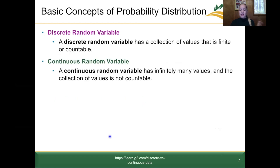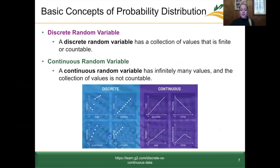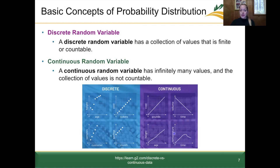Another way to think about discrete versus continuous random variables is something we've seen before. For discrete random variables, we have individual data points we can count. Whereas for a continuous random variable, we see just a line representing the data — a continuous line of all these data points, so we can't count each one individually. Here's that example for body temperature, where we can monitor temperature over time and get this continuous line.